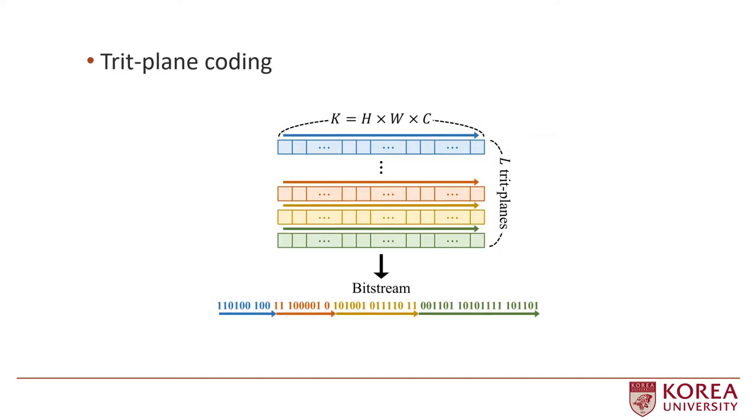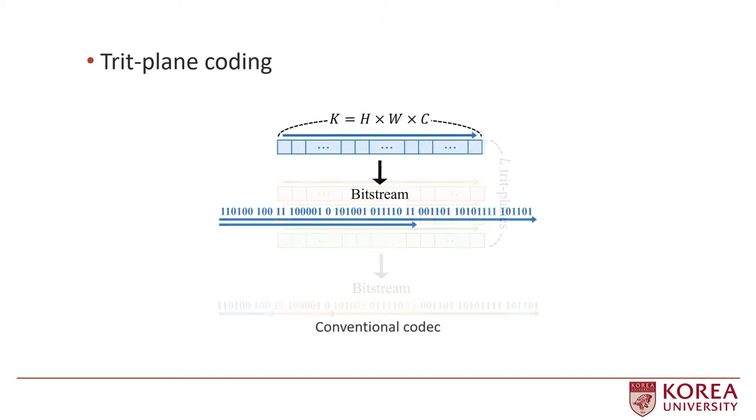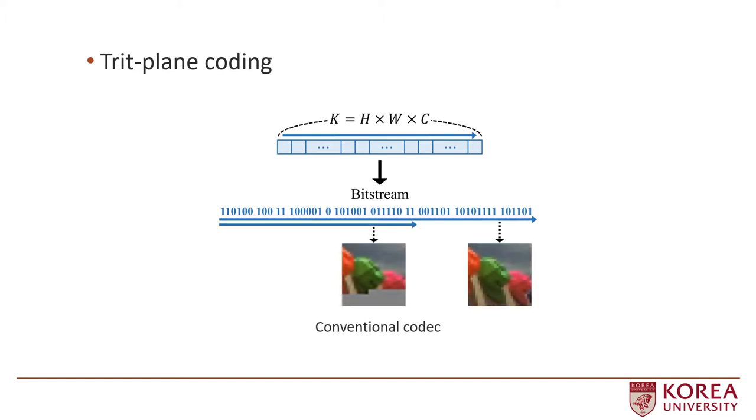We represent Y in ternary number system and encode a trit plane by trit plane. In conventional codecs, elements are transmitted in raster scan order. Therefore, decompressing a partial bit stream yields a severely degraded image.